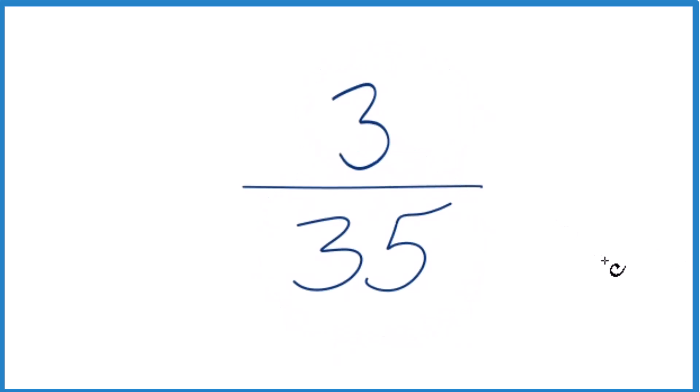We need to find a common factor, something that goes into 3 and 35 evenly. We're looking for a whole number. The thing is, the only whole number that goes into 3 and 35 evenly is 1.